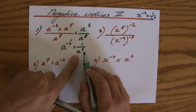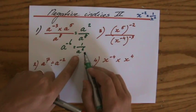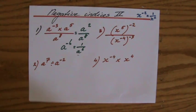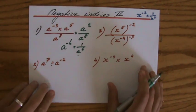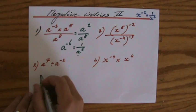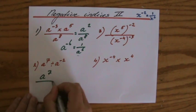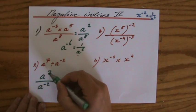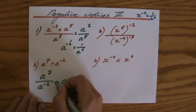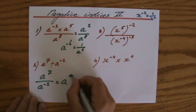Second question: a to the power 7 divided by a to the power minus 2. I'm gonna go a little bit quicker. I prefer fractions, so I'm gonna write it like this.